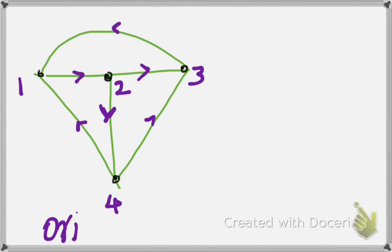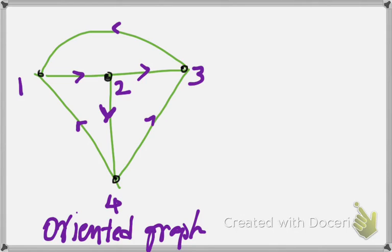Before we form the graph or the tree, or before we find out what the branches and links are, we need to have something called the oriented graph. This oriented graph is either provided to you in the question itself, or you might be given just the line diagram of a power system and you will have to draw the oriented graph yourself. So in the first step, let us find out how to form a tree from a given oriented graph. A tree is nothing but the oriented graph redrawn.